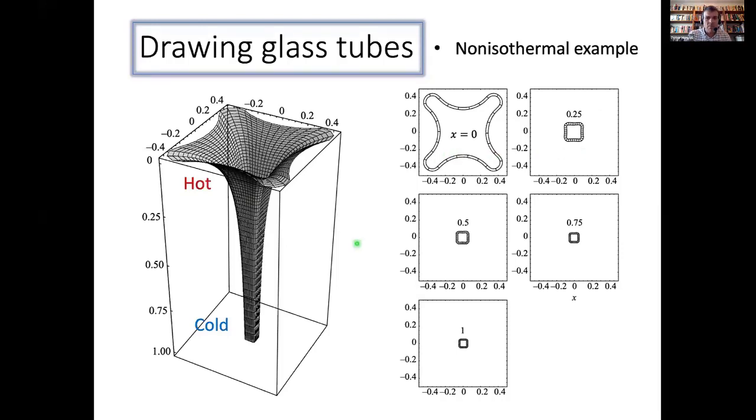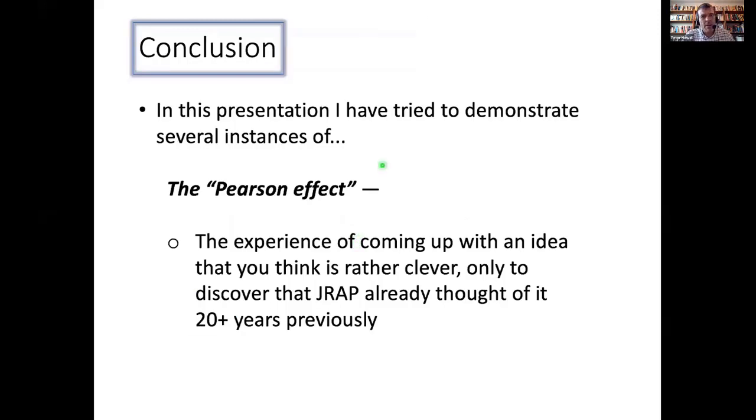And so I think I ought to wrap up. And so I don't really have any grand conclusions here. Apart from to say this, that I hope I've demonstrated several instances of what John Ockenden called the Pearson effect. And this is what happens when you come up with an idea that you think is really rather clever. And then you discover that Anthony already thought of it many years previously. And so I've had that experience many times in my career. And I'm pretty sure that many other people listening have had that experience as well. Okay, that's me done. Thank you for listening.